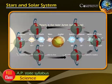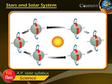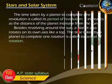Besides revolving around the Sun, a planet also rotates on its own axis like a top. The time taken by a planet to complete one rotation is called its period of rotation.